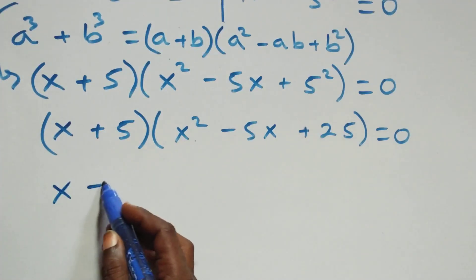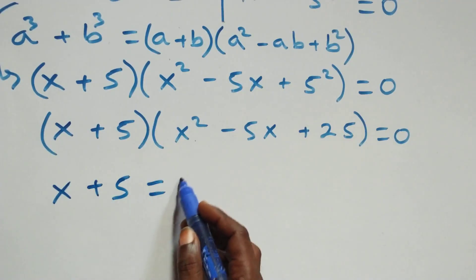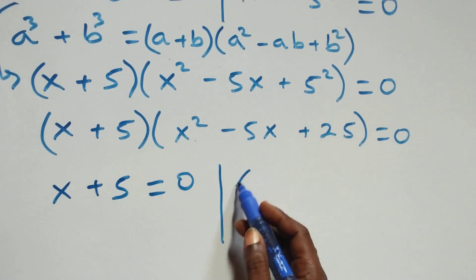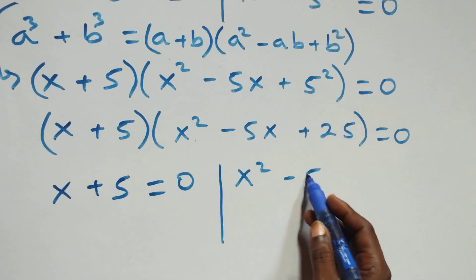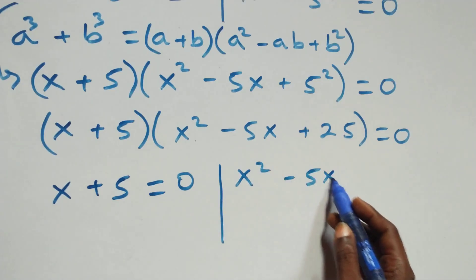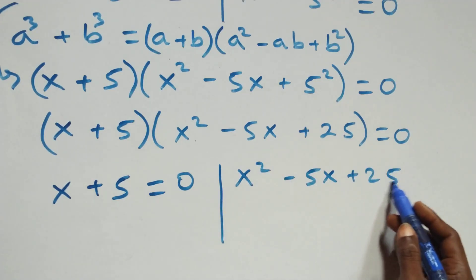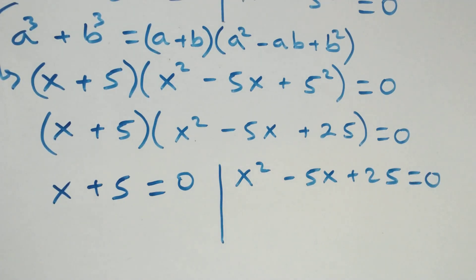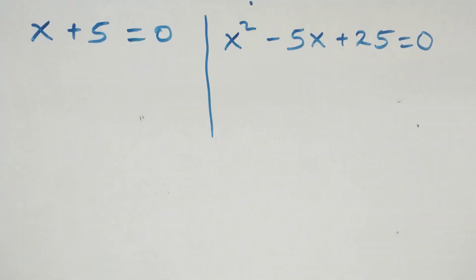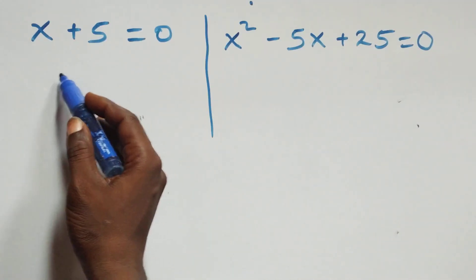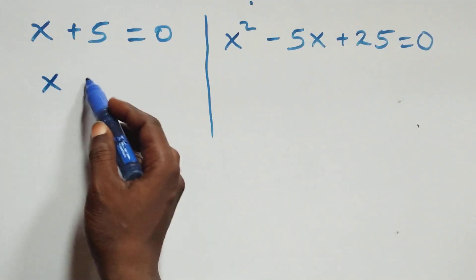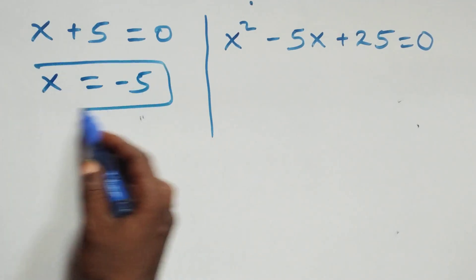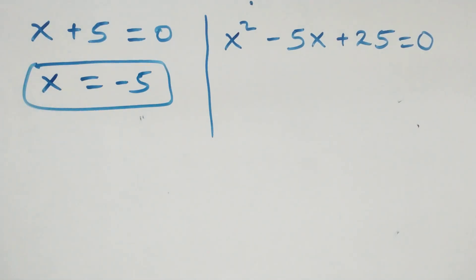From the factored form we have two sub-cases: x plus 5 equals zero, or x squared minus 5x plus 25 equals zero. Solving the first sub-case gives x equals minus 5, which is a real solution.